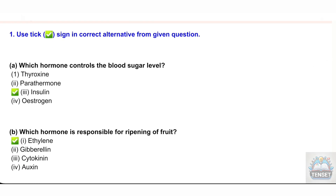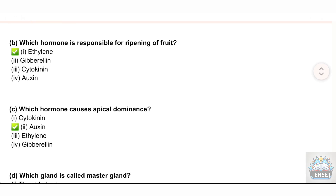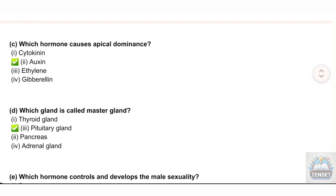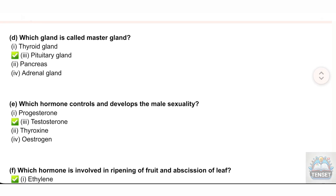B) Which hormone is responsible for ripening of fruit? Options: i) Ethylene, ii) Gibberellin, iii) Cytokinin, iv) Auxin. C) Which hormone causes apical dominance? Options: i) Cytokinin, ii) Auxin, iii) Ethylene, iv) Gibberellin. D) Which gland is called the master gland? Options: i) Thyroid gland, ii) Pituitary gland, iii) Pancreas, iv) Adrenal gland.